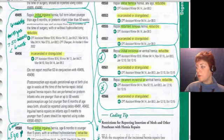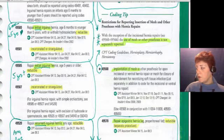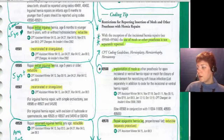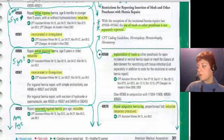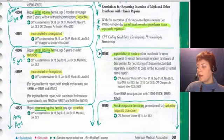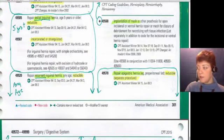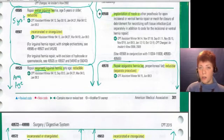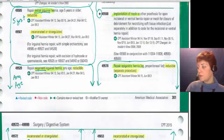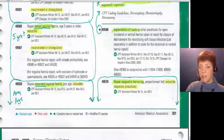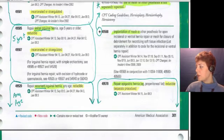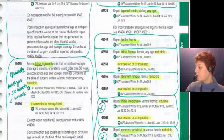Codes 49500 to 49501 are still initial inguinal, but now the age range is six months to less than five years — reducible versus incarcerated. Then 49505 and 49507 are still initial inguinal but for patients five years or older — reducible or not. Finally, 49520 is for recurrent inguinal hernias. At that point, age doesn't matter — it says any age. My bubbling technique uses little down arrows when a bubble continues to the next column or page, with a connector arrow up on the other side.